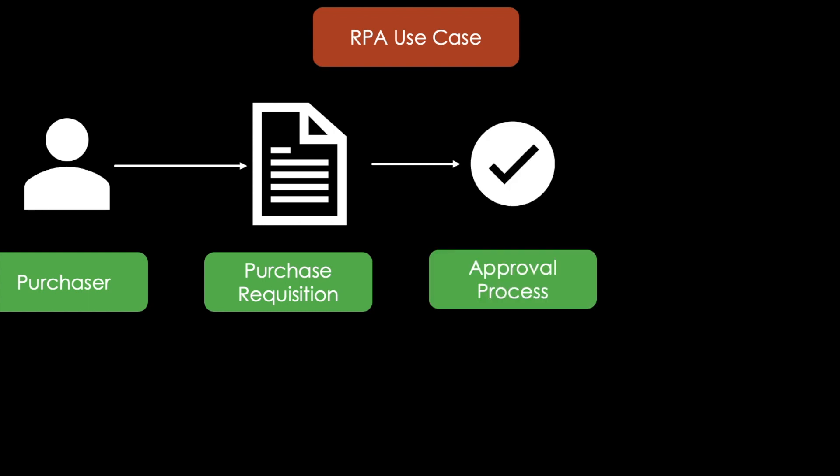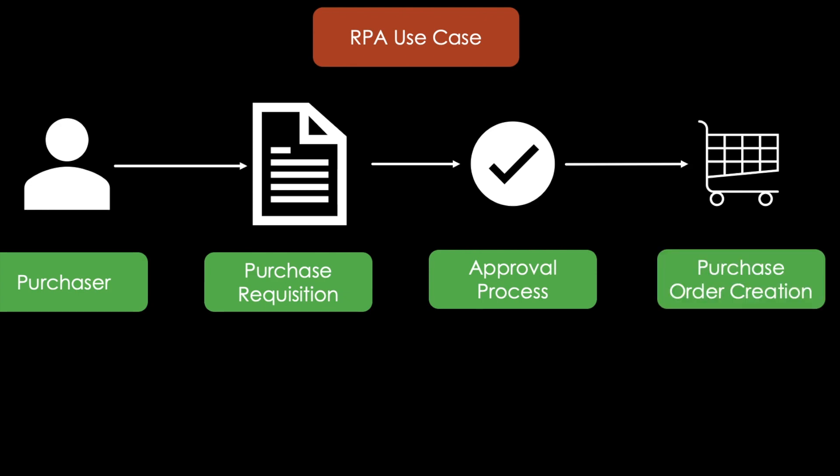Your supervisor needs to approve your purchase. Afterwards, your supervisor creates a real purchase order out of the purchase requisition. As you can imagine, executing this process manually can be quite tedious. This is where RPA comes into the game. The creation of the purchase requisition, the approval process, as well as the purchase order creation can all be supported by RPA.